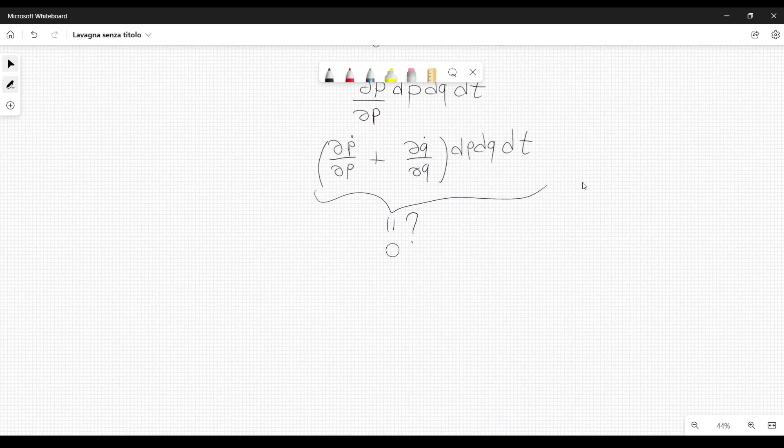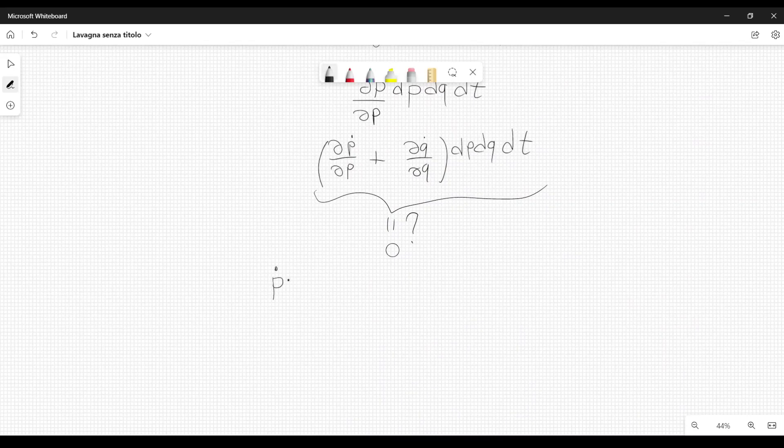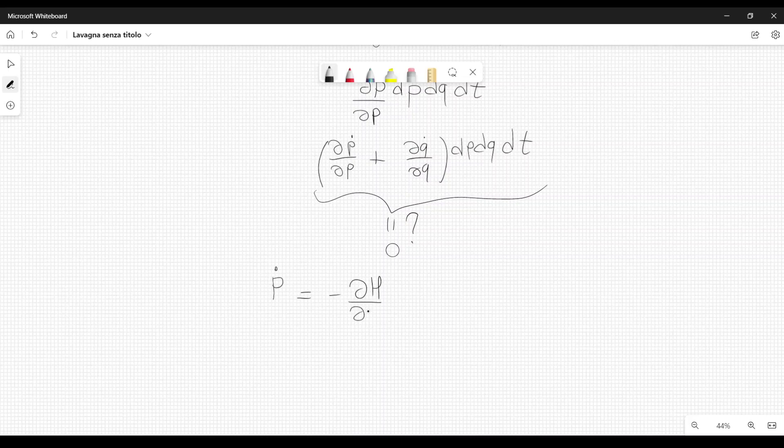In order to show that, let's consider Hamilton's equations. From Hamilton's equations, we know that p dot is equal to minus the derivative of the Hamiltonian with respect to q. Whereas, q dot is equal to the derivative of the Hamiltonian with respect to p, momentum.